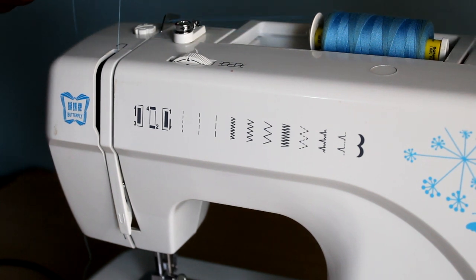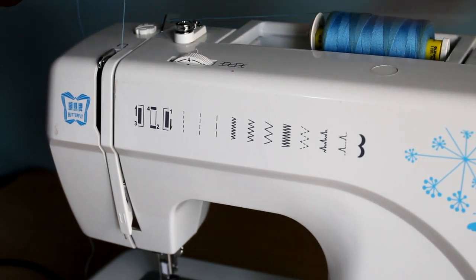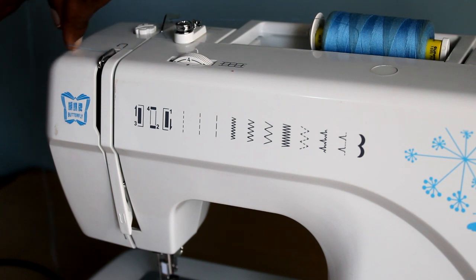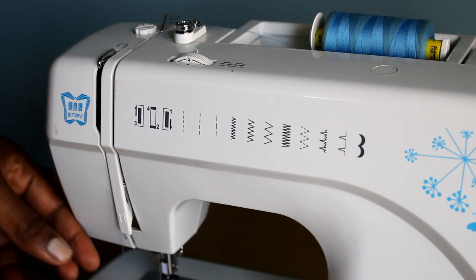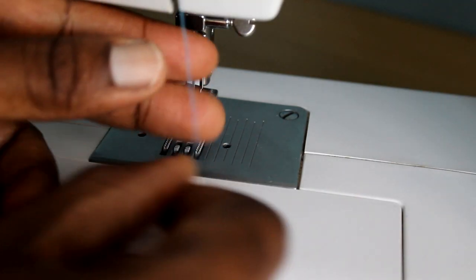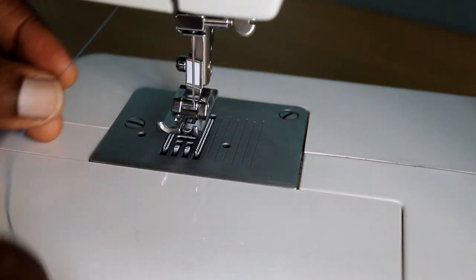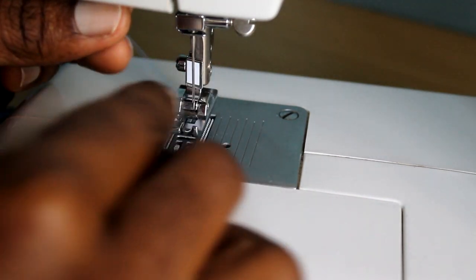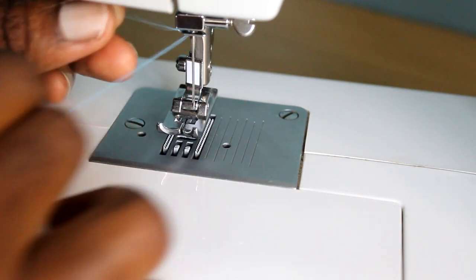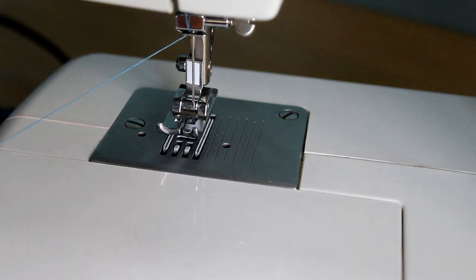Then I have a take-up lever which I'm going to bring up. I'm going to pass it around that lever and go back down to the needle. Now at the needle I can pass it through one more thread guide here. All these thread guides just keep your tension right and keep your thread from tangling.